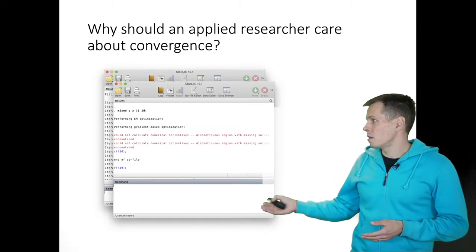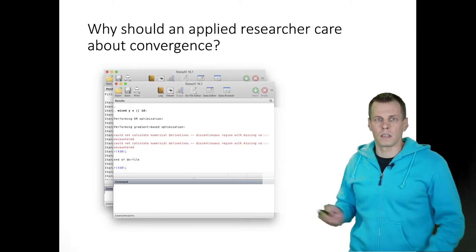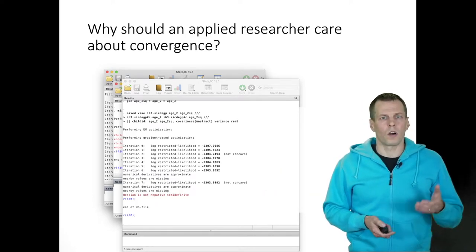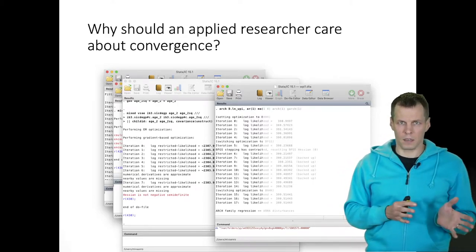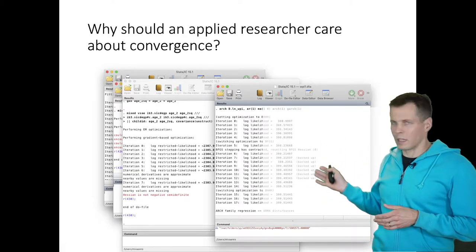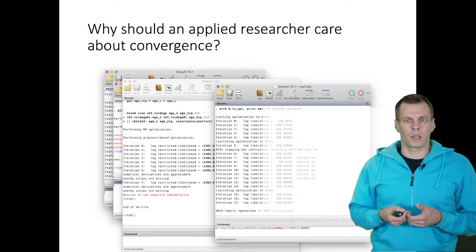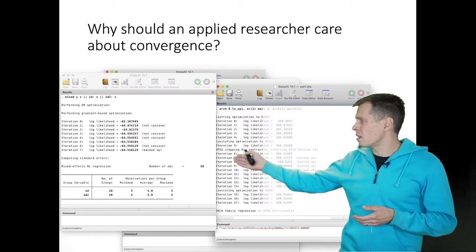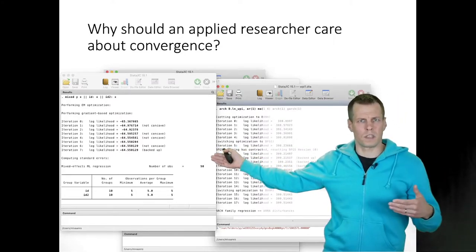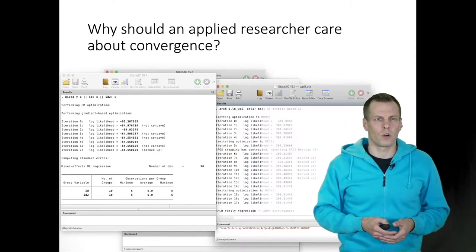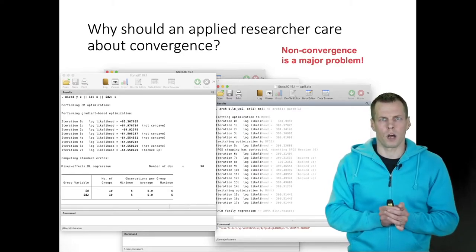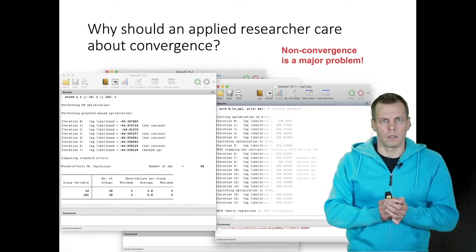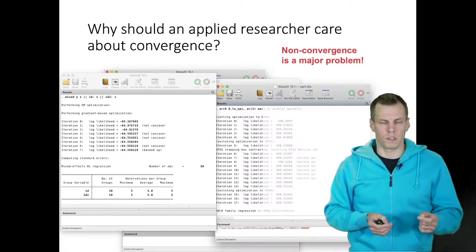Another thing you might see is error messages about derivatives or the Hessian matrix — warnings that the Hessian cannot be calculated. You might also see a printout between different iterations in the maximum likelihood estimation, or you might get results accompanied by a 'not concave' warning. Non-convergence is a major problem in the sense that if your model doesn't converge, you generally cannot trust the results — you might get some results, but you don't know whether they can be trusted at all.